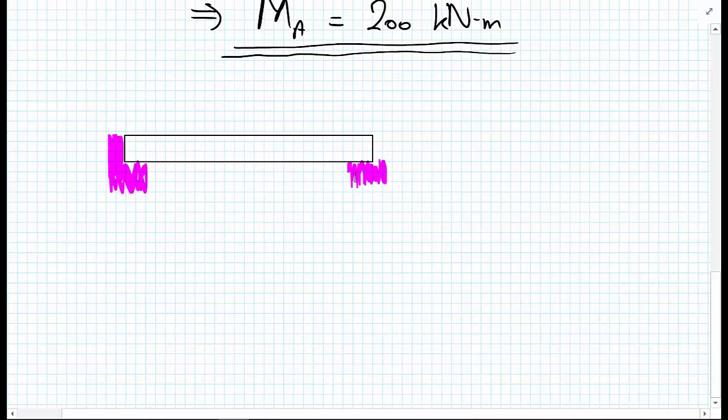The free body diagram for this wall gave us a y reaction RAy and a potential x reaction RAx that really depended on what kind of external force we had. And we also had a y reaction RBy. So that was the free body diagram.